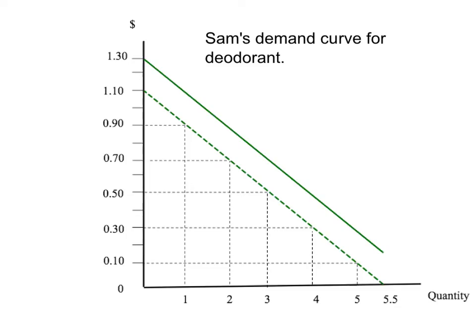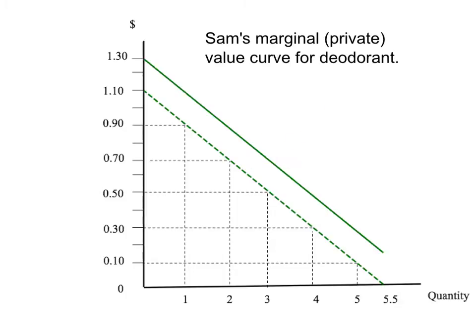We have the demand curve for Sam's deodorant, shown as a dotted green line, and that demand curve is also Sam's marginal private value curve for deodorant. For any quantity — say 3 squirts of deodorant — it tells us Sam's marginal value, his willingness to pay at the margin for an extra squirt. If he already has 2, he's willing to pay just 50 cents for a third squirt.